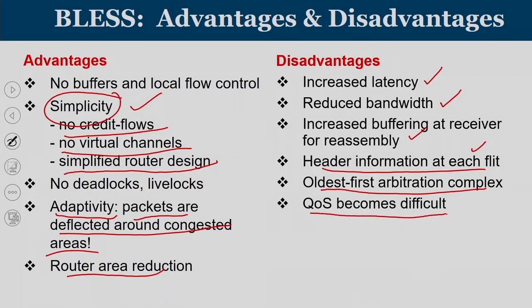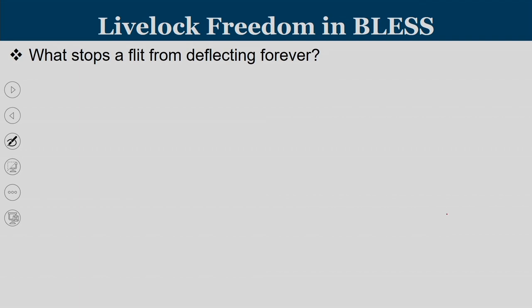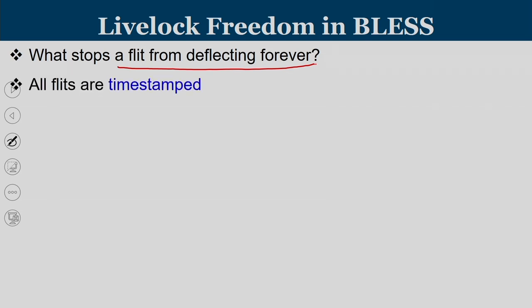Quality of service becomes difficult in BLESS because many packets get deflected. A critical packet may not be the oldest flit in the system and can get deflected. Regarding live lock freedom: all flits must be time-stamped so there is a total ordering. Older flits are assigned to productive ports. We need to ensure that a flit cannot be deflected forever — that is what live lock means, circulating in the system forever.